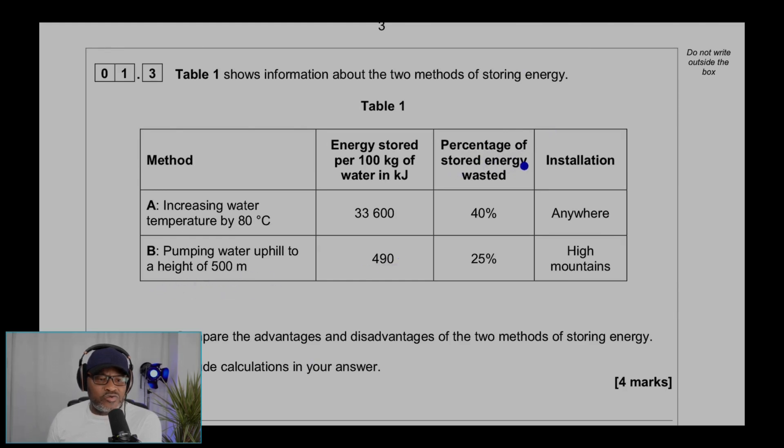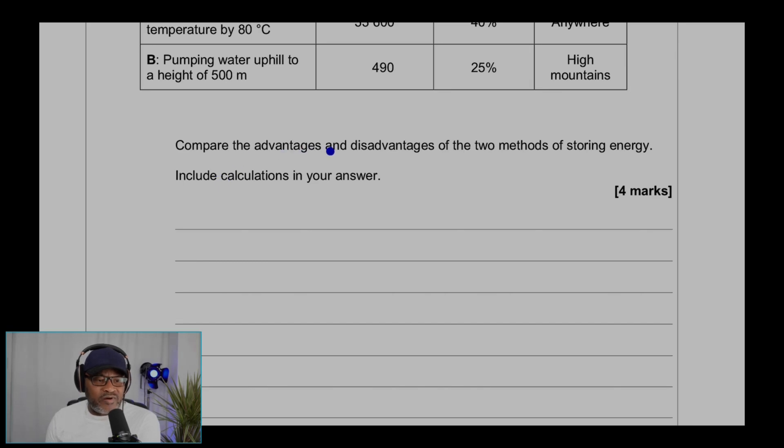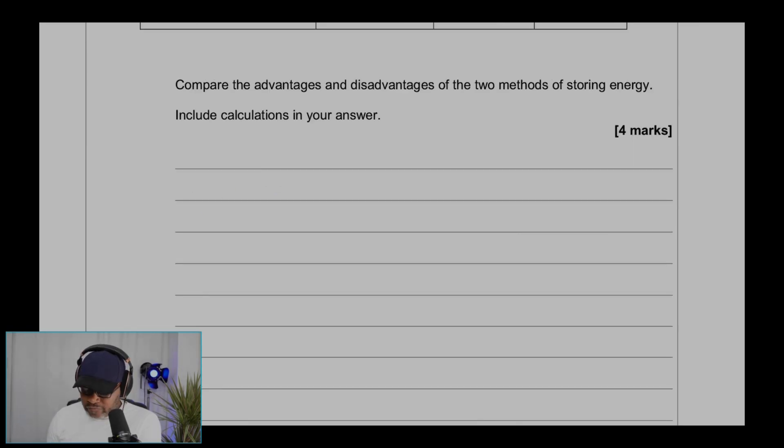Percentage of energy stored wasted: 40% for A, 25% for B. Installation: anywhere, high mountains. We're told to compare the advantages and disadvantages of the two methods of storing energy. Include calculations in your answer.